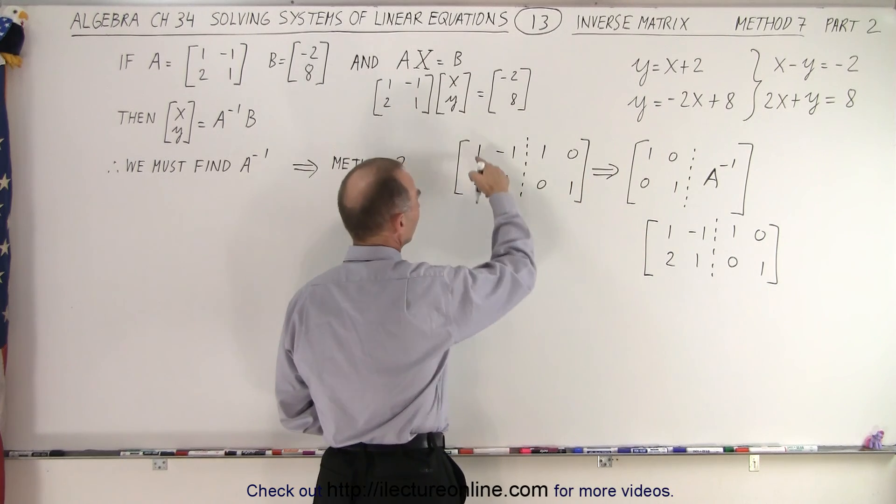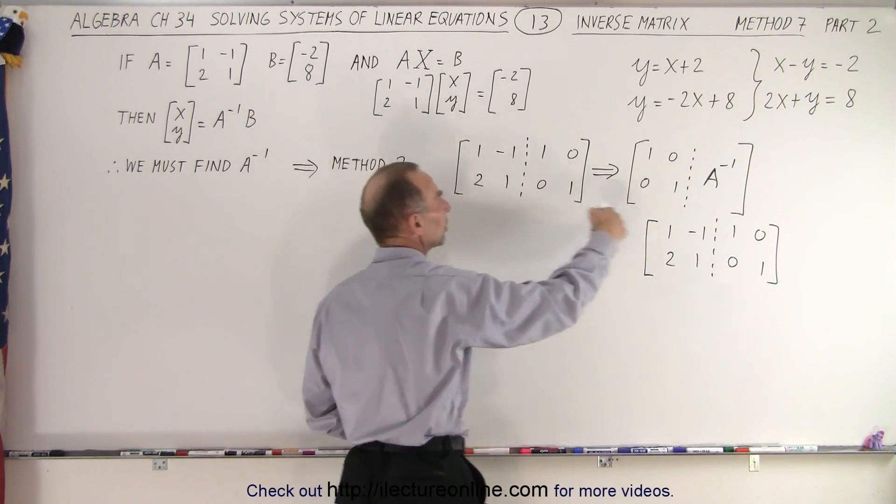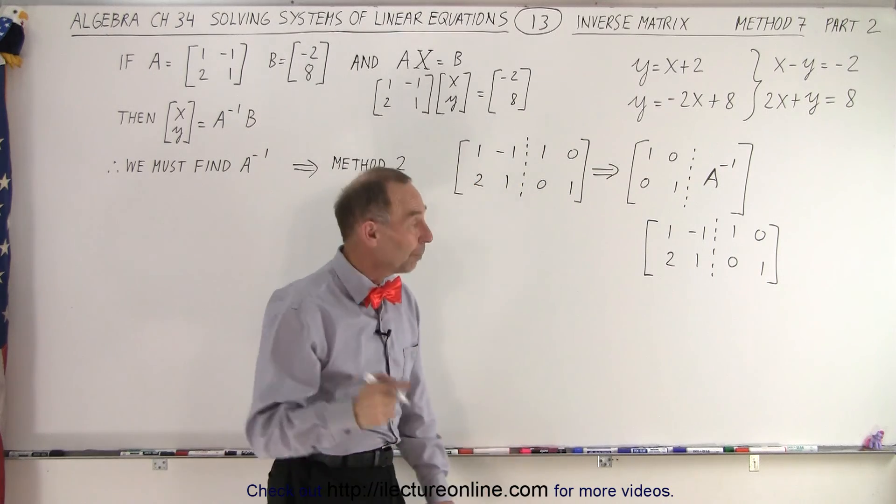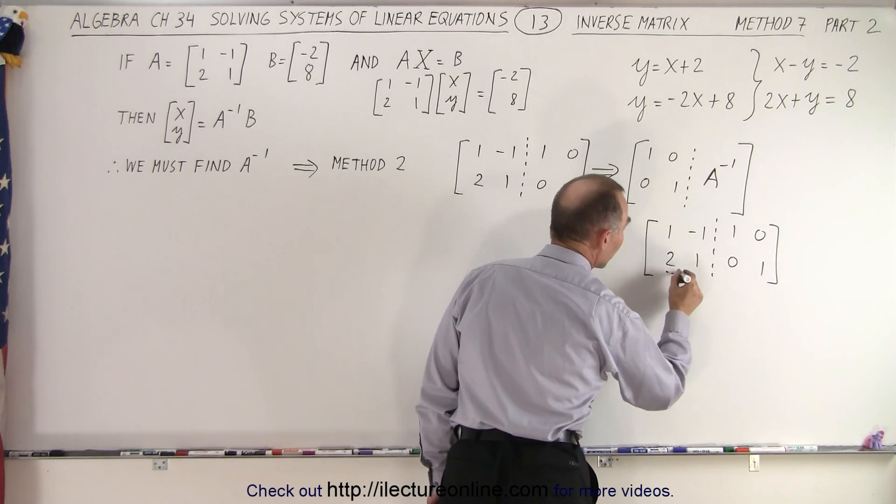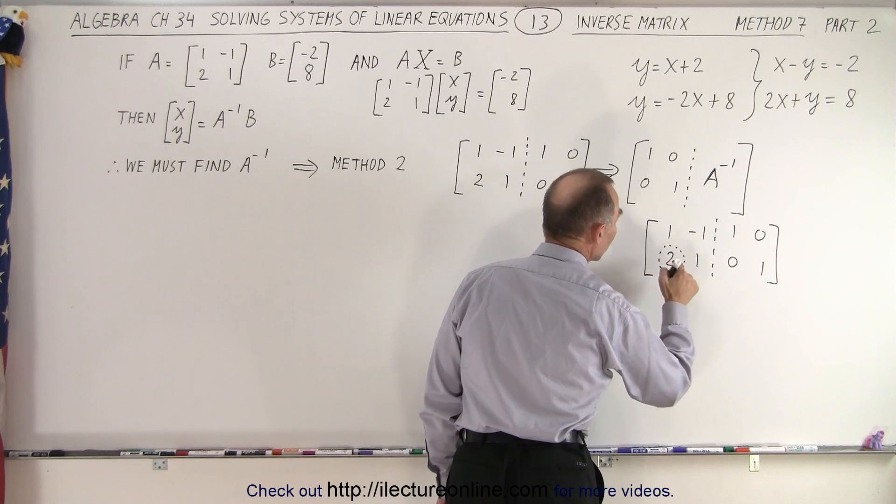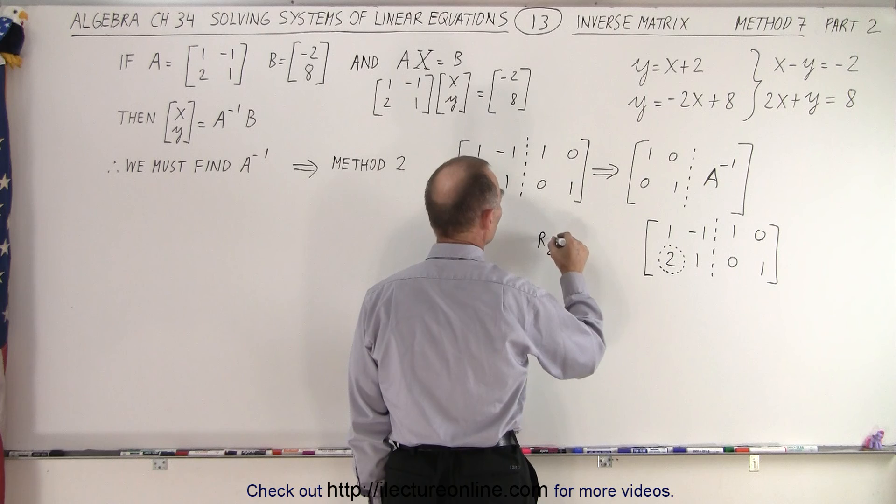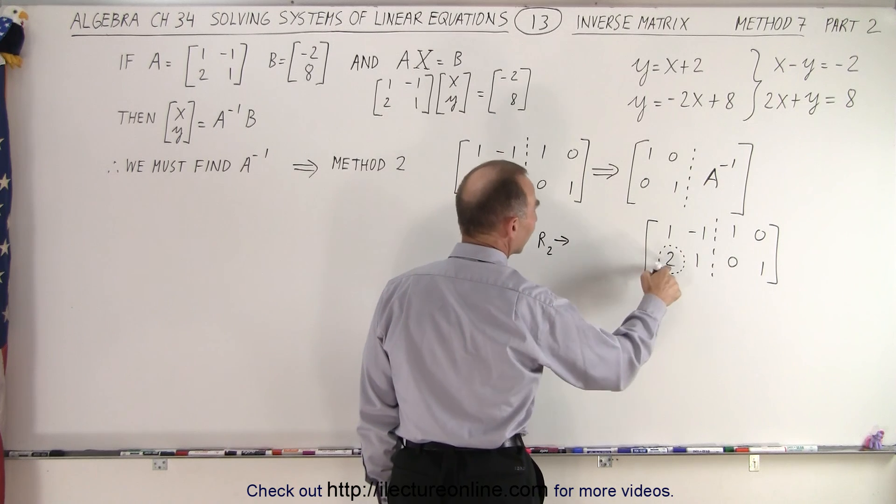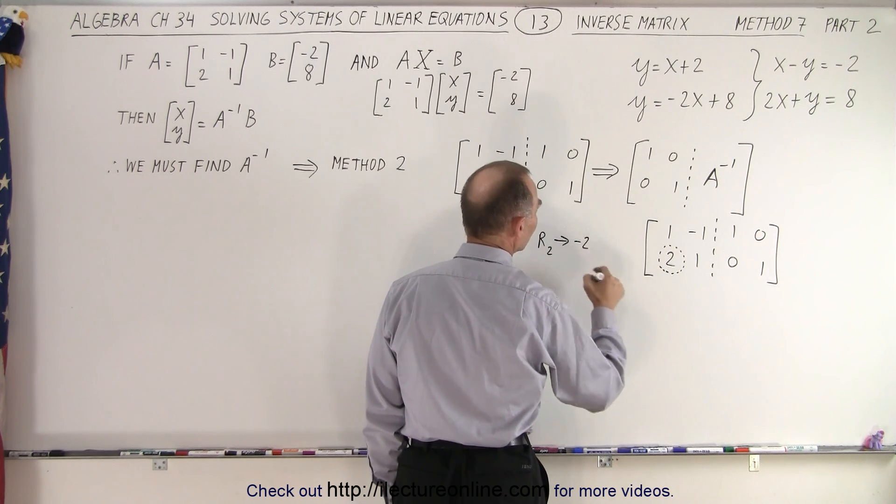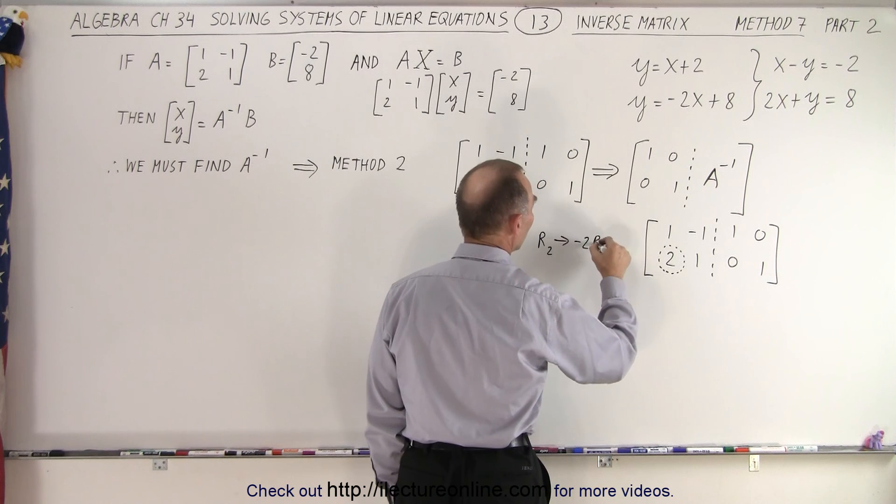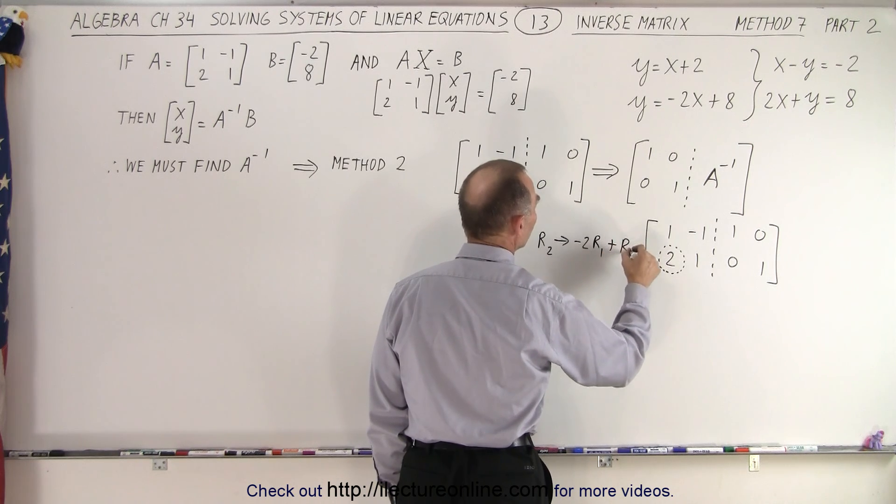And again, the first thing we're going to do because notice we want ones across the diagonal which we already have. But we want to get rid of this number right here. And so we want to turn that into a 0. And we can do that by taking row 2 and replacing it by the negative of this number, negative 2, times the row with the 1 in it and adding it to row 2.